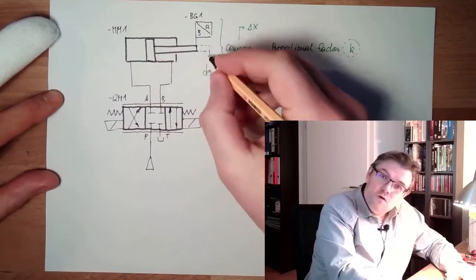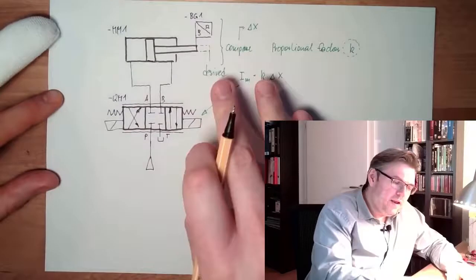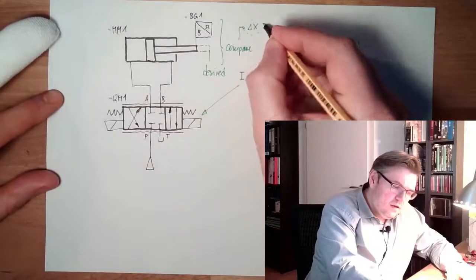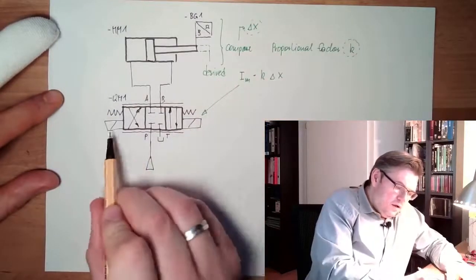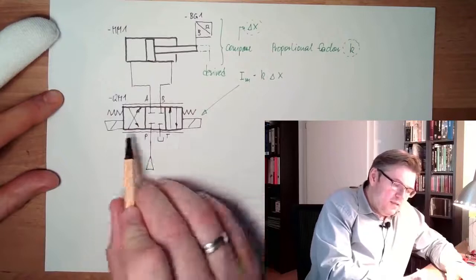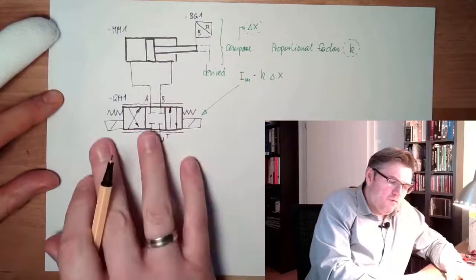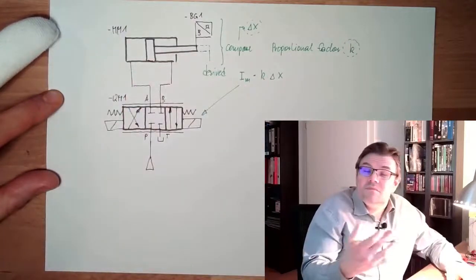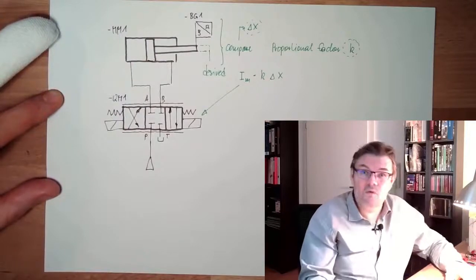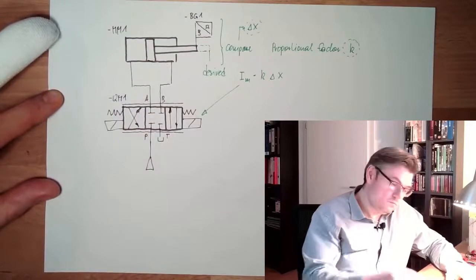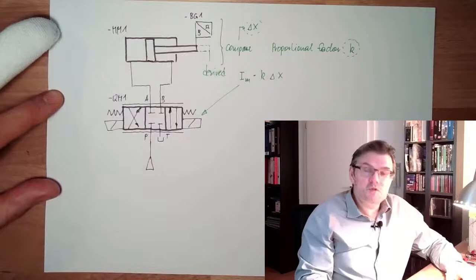So this is a position control loop: measure position, know where we want to go, depending on the difference, adjust the magnetizing current of the proportional valve and let the cylinder move. Positioning control loop.